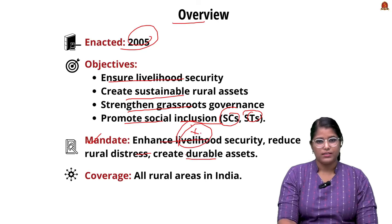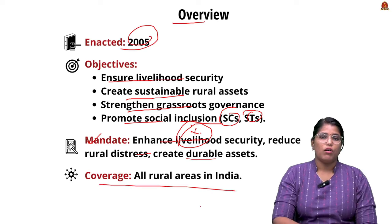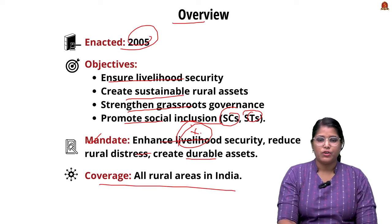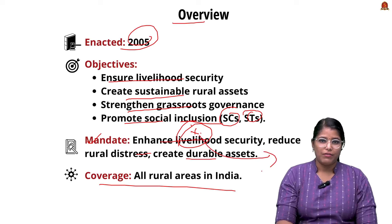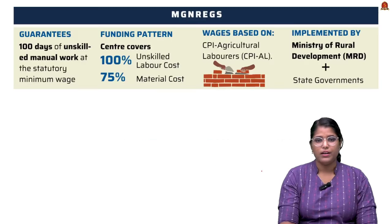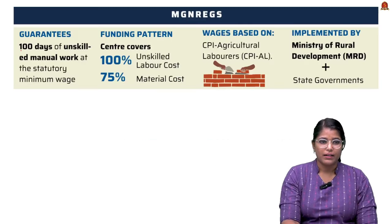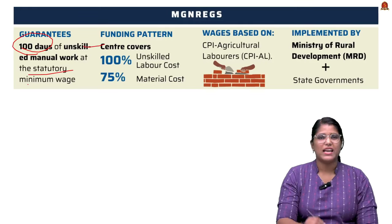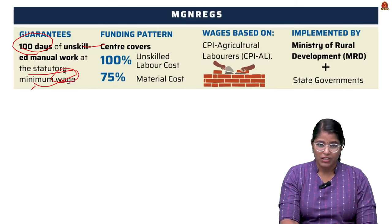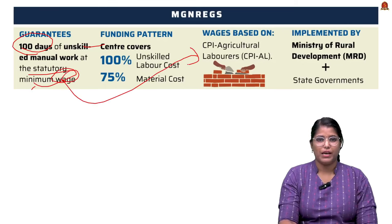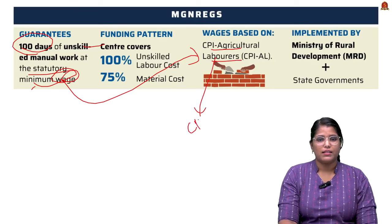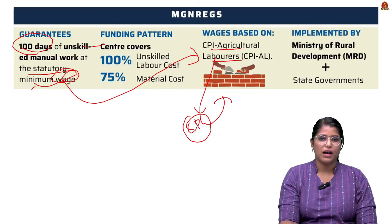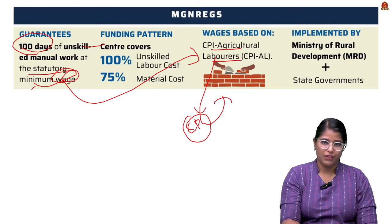The scheme covers all rural areas in India. Rural livelihood security is provided by 100 days of guaranteed unskilled manual work at a statutory minimum wage. This wage is based on the CPI Agricultural Labour, where CPI stands for Consumer Price Index.